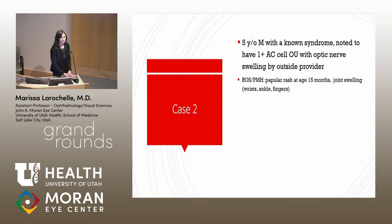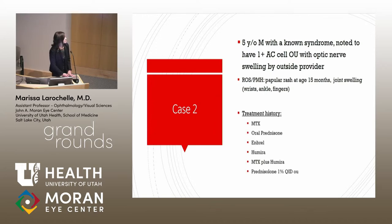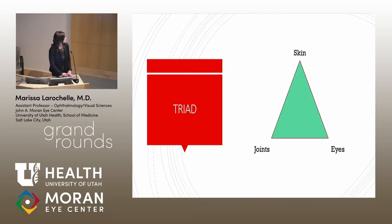He had a past medical history notable for a rash starting at age 15 months, as well as arthritis in several joints. He has an extensive treatment history and is already plugged into rheumatology — he has been on prednisone and several immunosuppressives, and is currently on topical steroids in both eyes. If we're paying attention, he has a triad of uveitis, dermatitis, and arthritis.